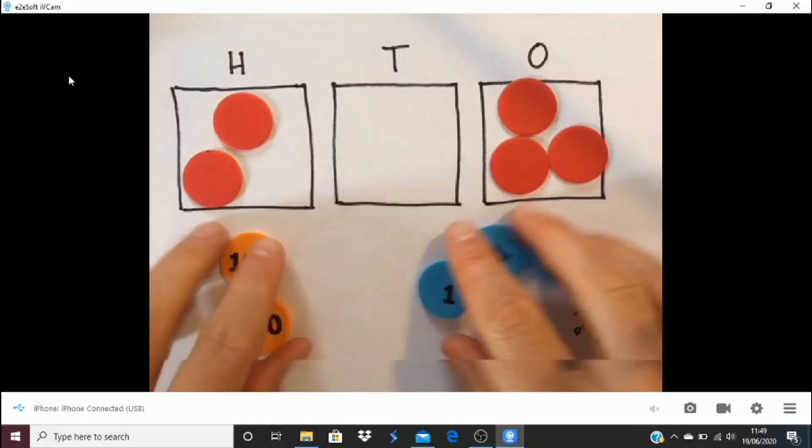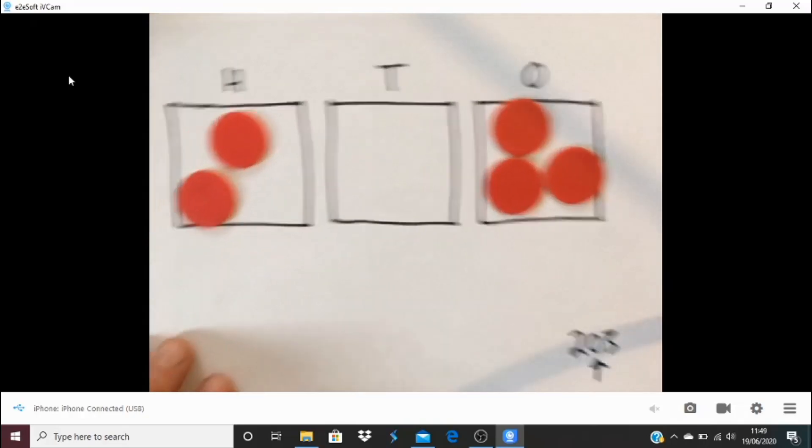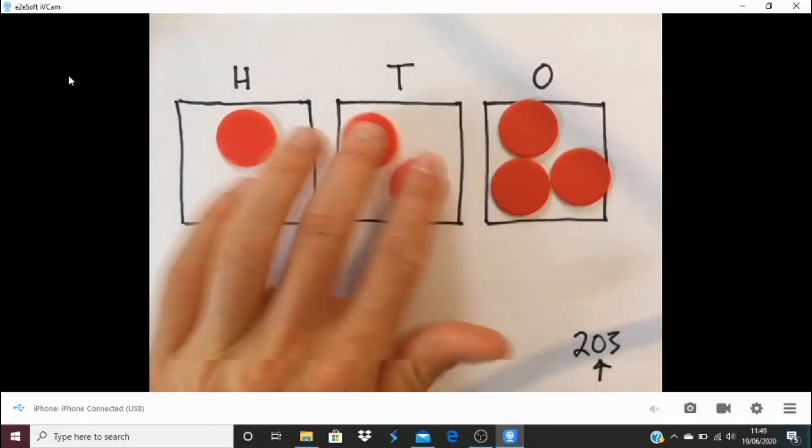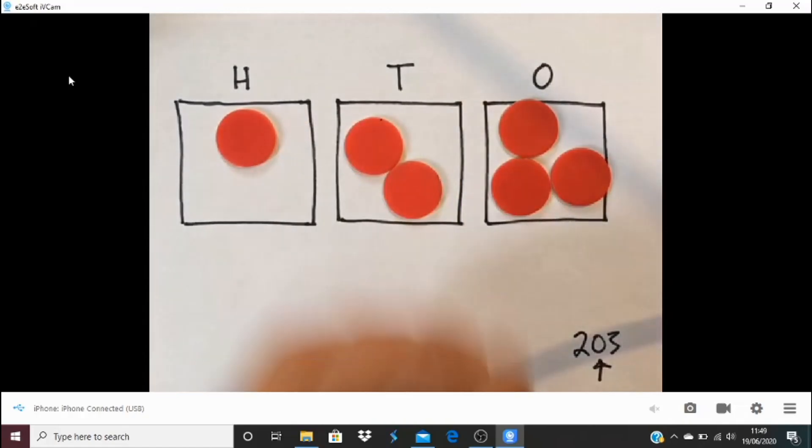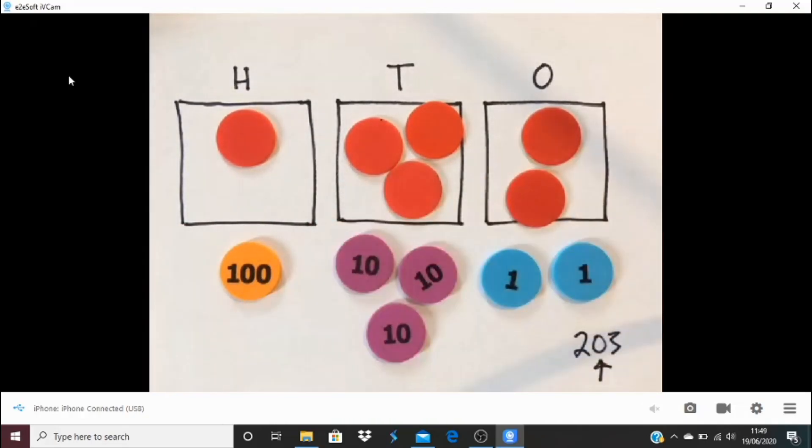And again, let's just see if we can have a go at making another one. So this time, and again, tell the screen what number I have made this time. So what number are you looking at there? Well, you are looking at one hundred and ten, twenty, thirty, two.